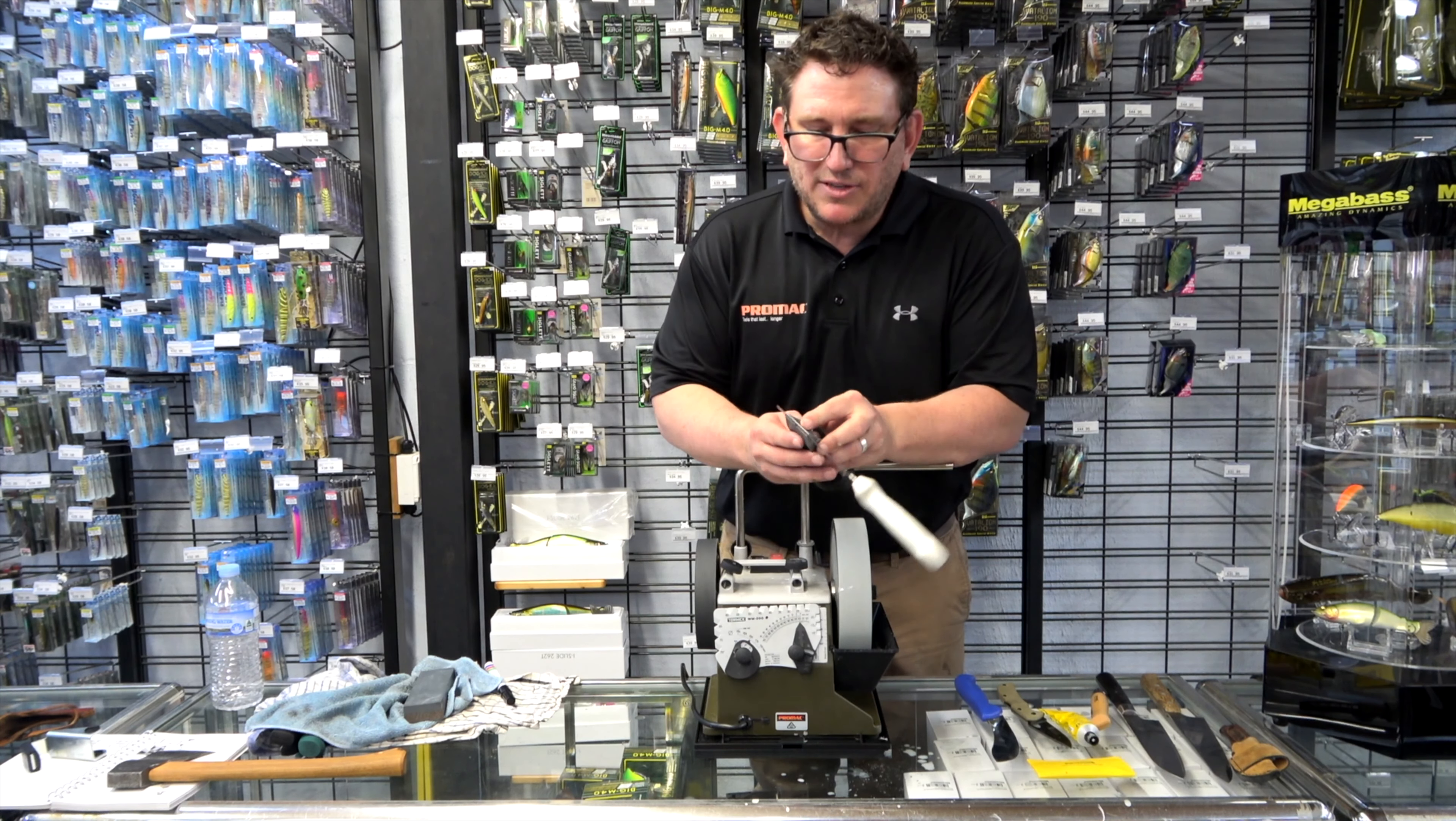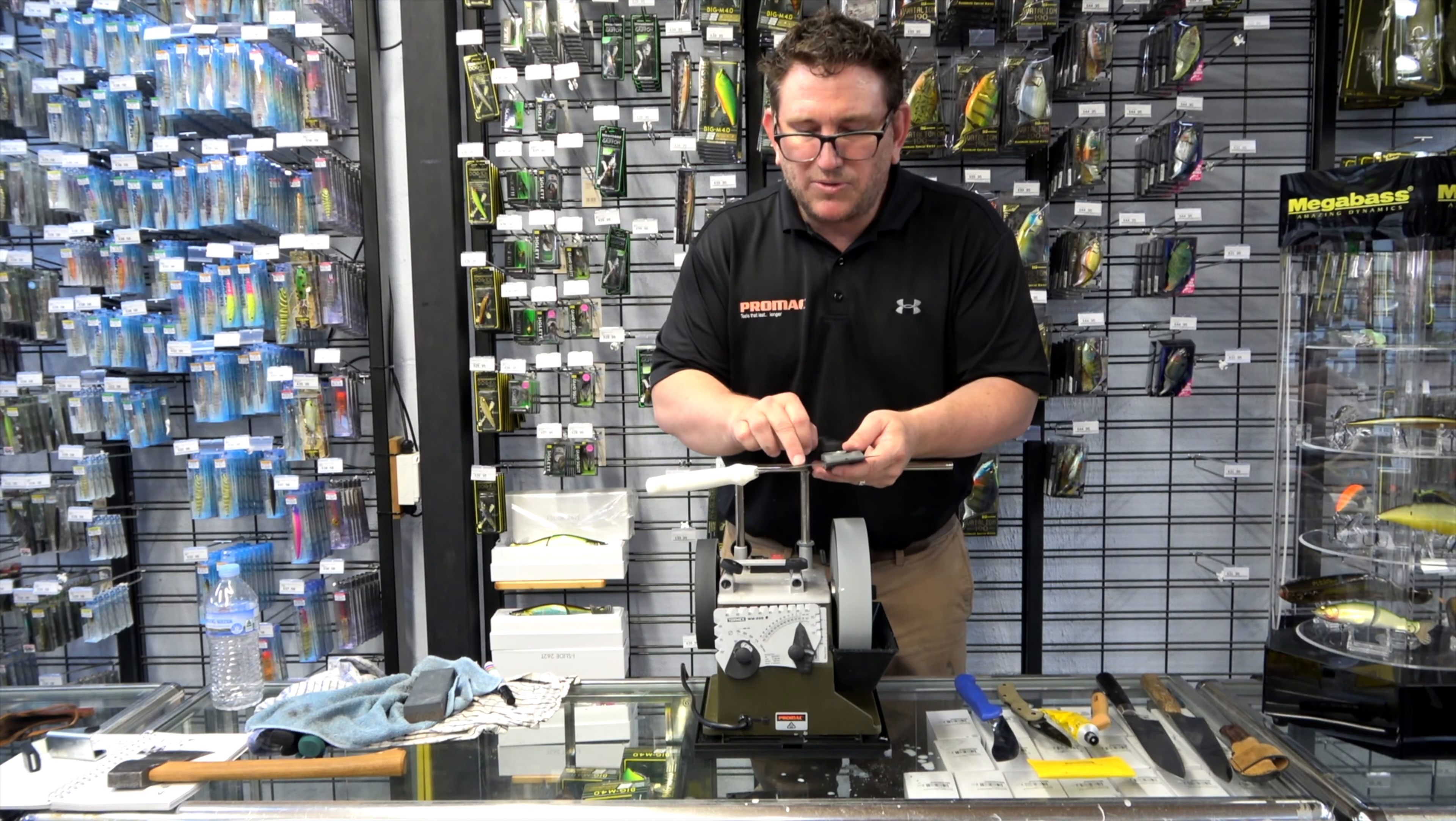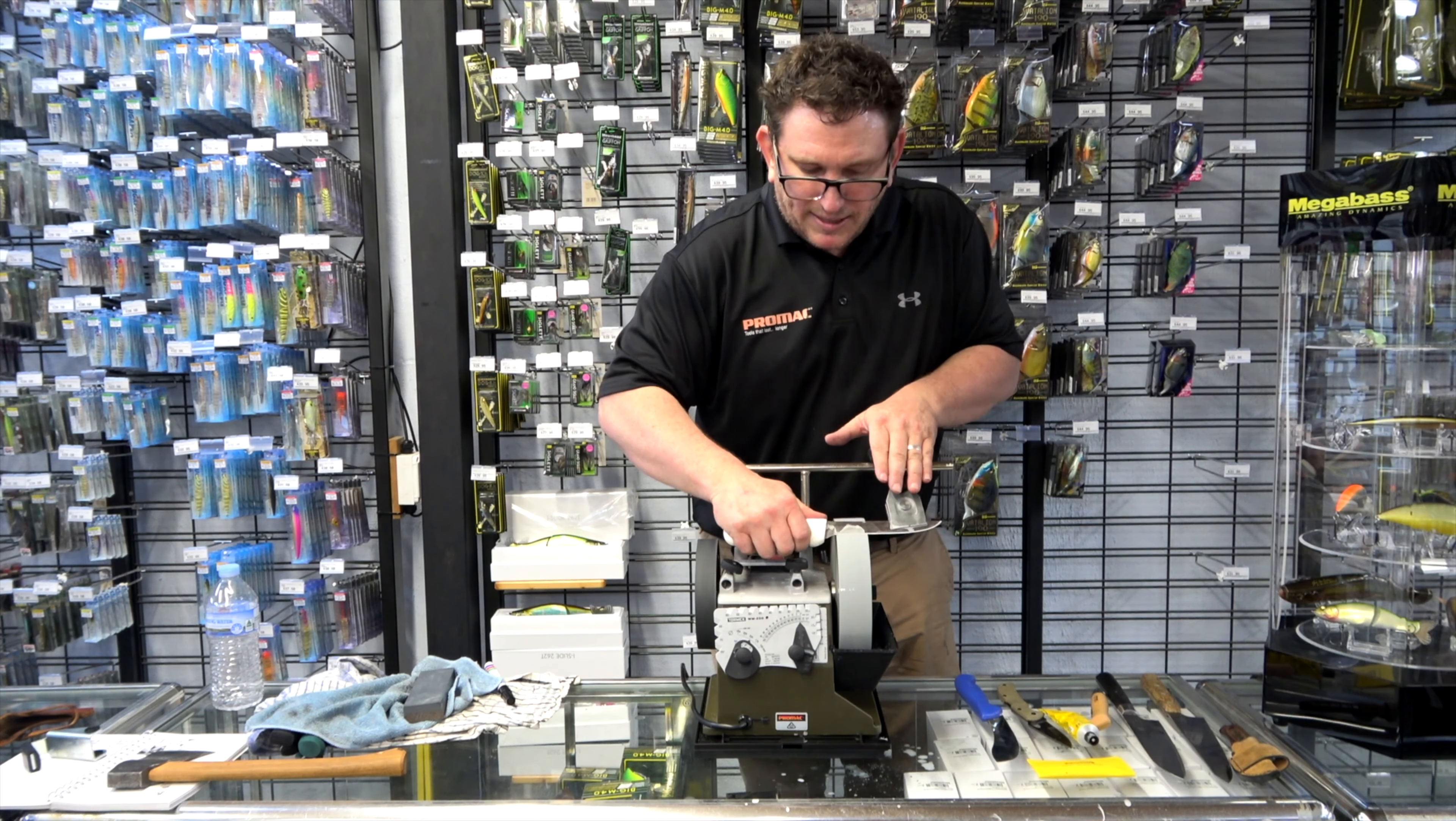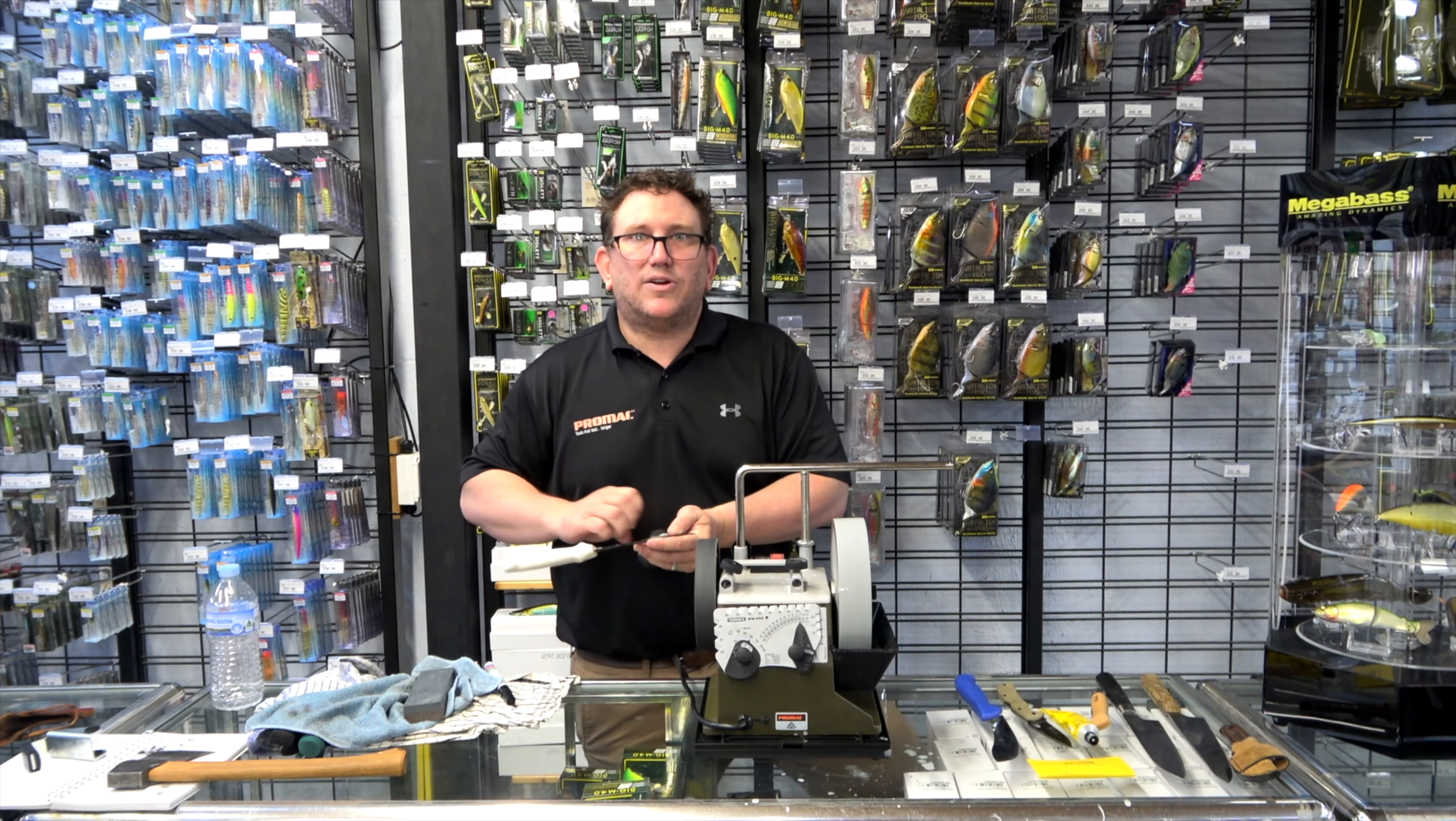Now that we've done a couple of passes at the thousand grit, we've got a nice symmetrical edge from tip to toe on both sides. We're just going to do one pass here just to loosen the burr before I take it over to the leather strop.